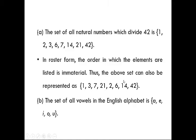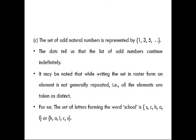You can jumble all the elements — that doesn't create any problem. For example, the set of all vowels can be written starting with u, then o, then a, then e — it makes no difference. For the set of odd natural numbers, we write {1, 3, 5, ...} with dots indicating the list continues indefinitely, since odd natural numbers are infinite.